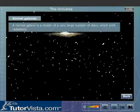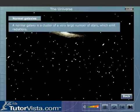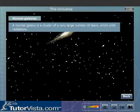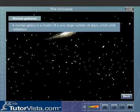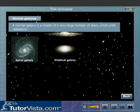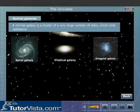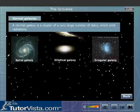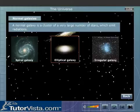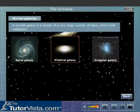A normal galaxy is a cluster of a very large number of stars which emit radiations. Normal galaxies are further classified as spiral galaxies, elliptical galaxies and irregular galaxies. A spiral galaxy has a spiral shape. The elliptical galaxy has an egg-like appearance. The irregular galaxy does not have any definite shape.